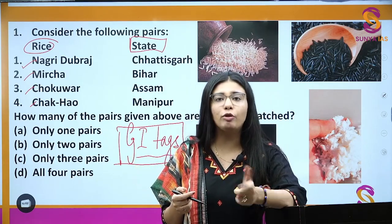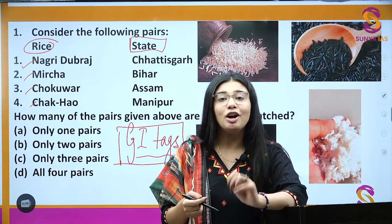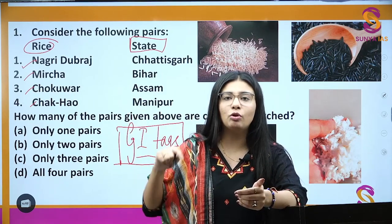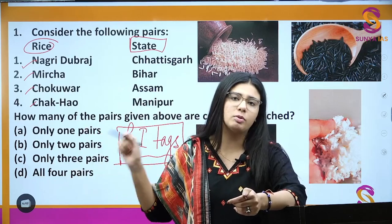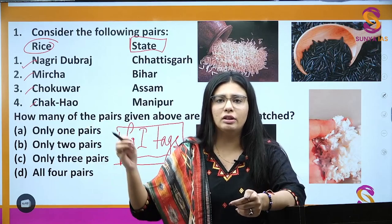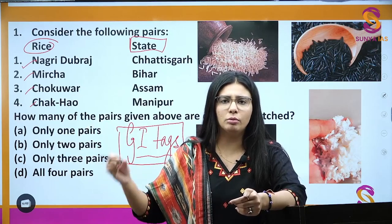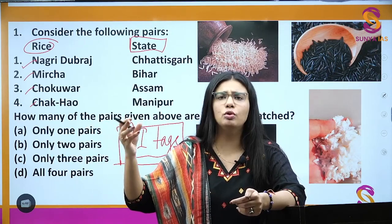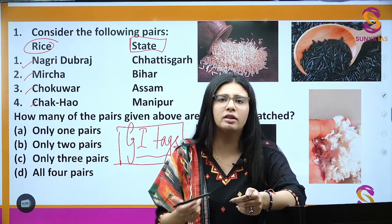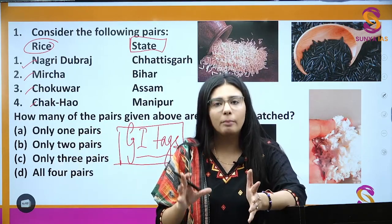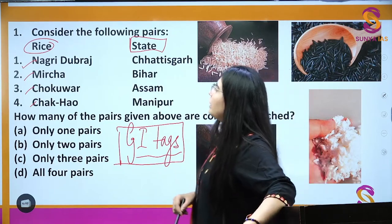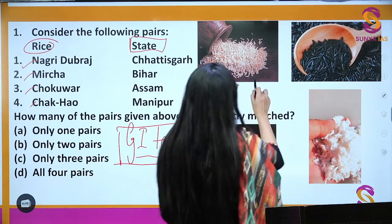For example, 'Gucci,' a type of mushroom, got the GI tag. It belonged to Jammu & Kashmir, and the question was asked by UPSC directly about which category it belongs to — the correct answer being that it is a type of mushroom. Now here we have Nagari Dubraj, and in clockwise order I have given you images of all different types of rice available.